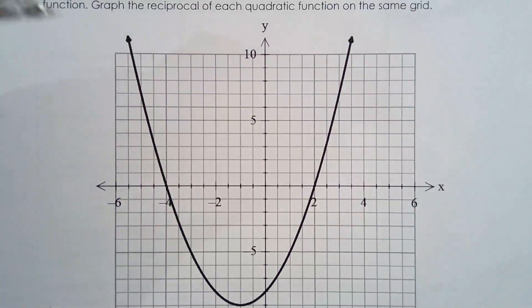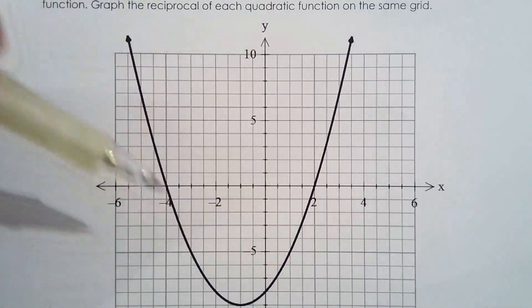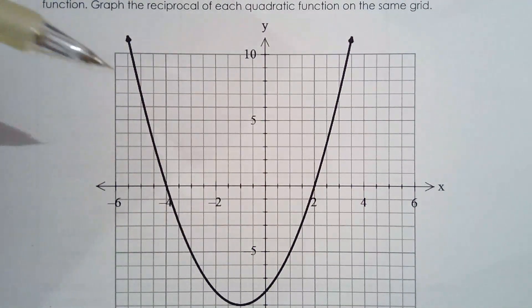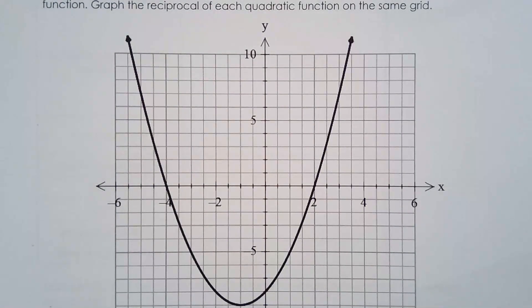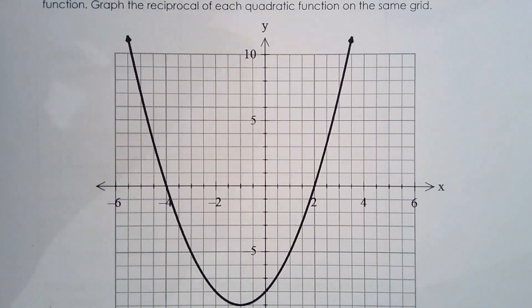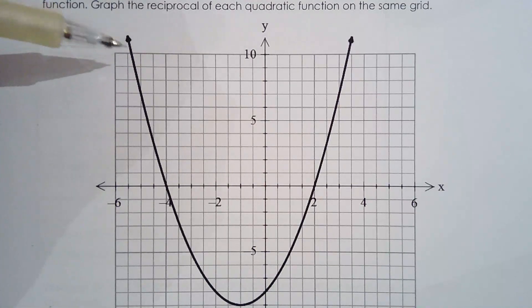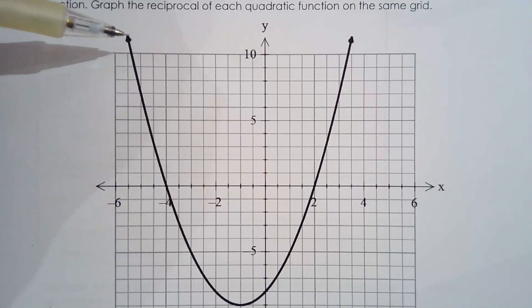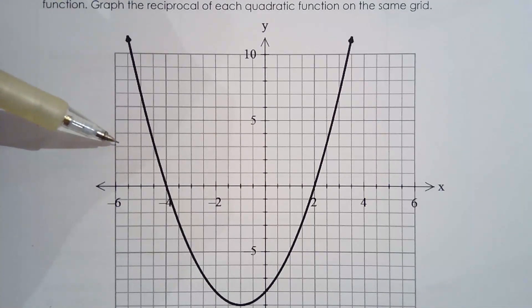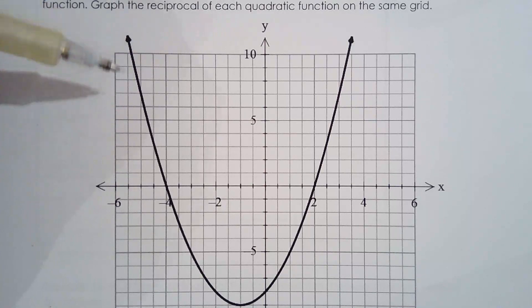So what you do is you look at the original function before you take the reciprocal — whether it's linear, cubic, quadratic, doesn't matter. Since I'm taking the reciprocal of a quadratic function in this lesson, that's why I have the quadratic here. Remember: the reciprocal of a large value — say 100 — becomes 1 over 100. So a big value becomes a small value.